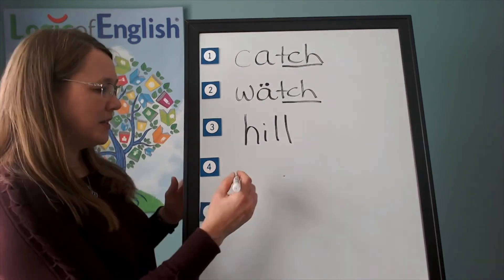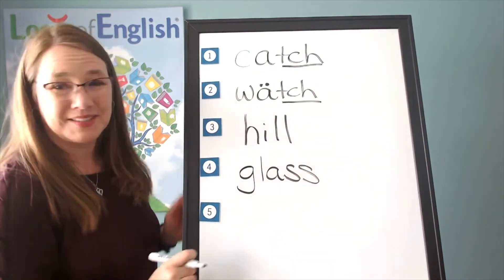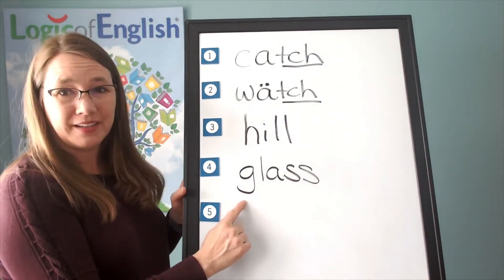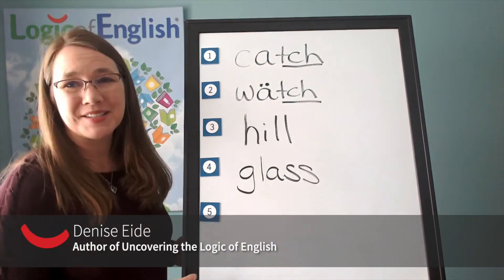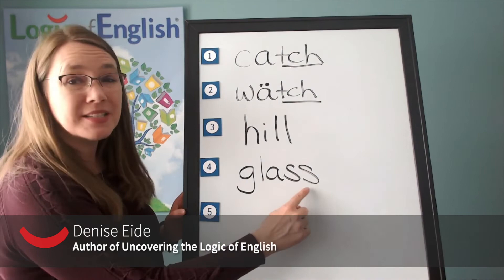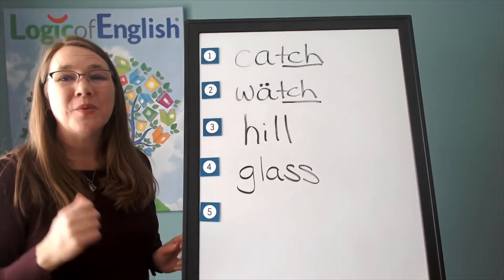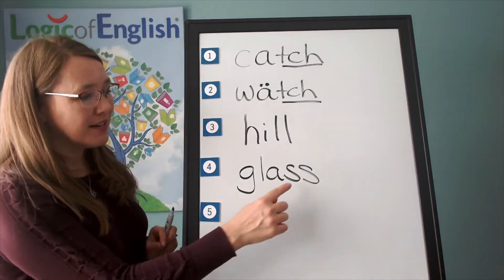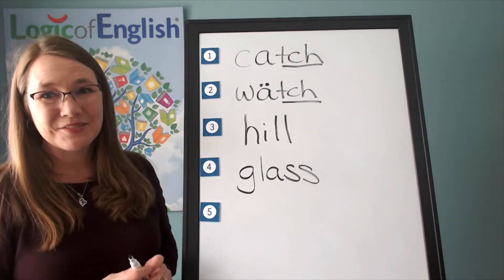Now help me to write it. G, l, a, s, s. Let's sound it out. G, l, a, s, s. Glass. What do you notice about the word glass? Yes, we double the s. And why? We often double F, L, or S after a single vowel at the end of a base word.